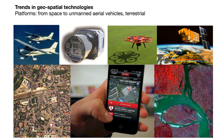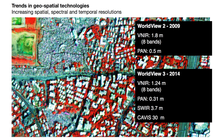Another trend in geospatial technologies is the increasing spatial, spectral, and temporal resolutions of images and data being captured. For example, a Worldview image was produced by the Worldview 2 satellite in 2009. In 2014, the next-generation Worldview satellite was launched with even higher resolution, more bands, and a higher return rate. It's now possible to collect imagery, theoretically at least, every day for the same piece of the Earth's surface.